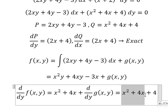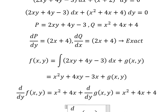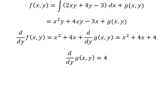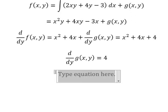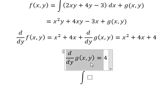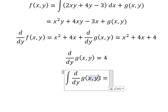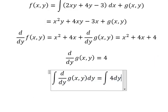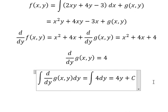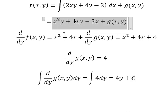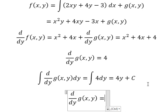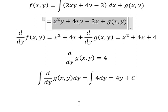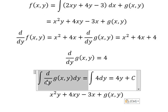Now we need to simplify this for both sides, and we have number 4 here. Next, we put the integration for both sides. And we have 4y plus c. Now we go back here. The integration of this one gives us g(y).